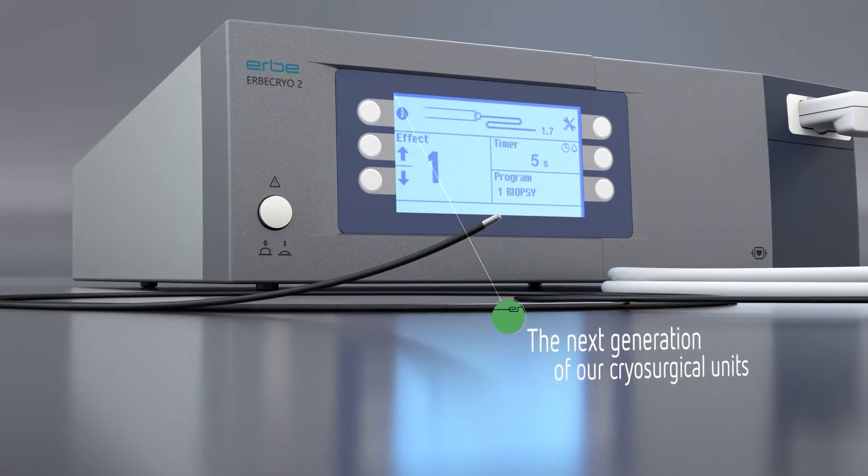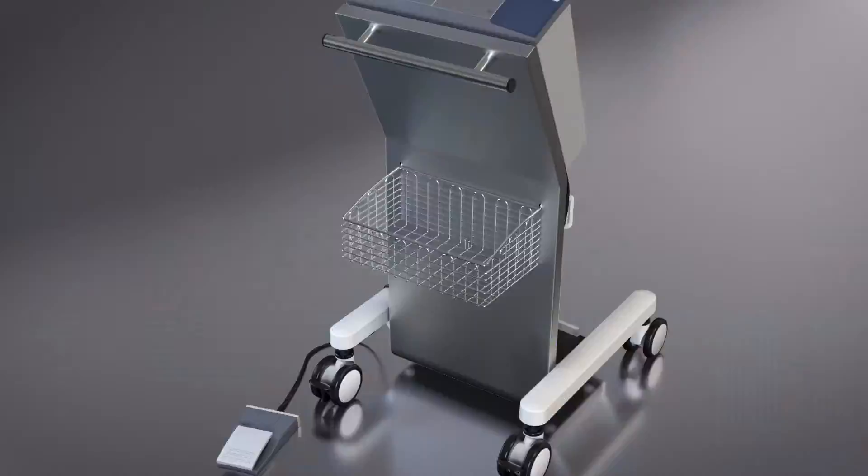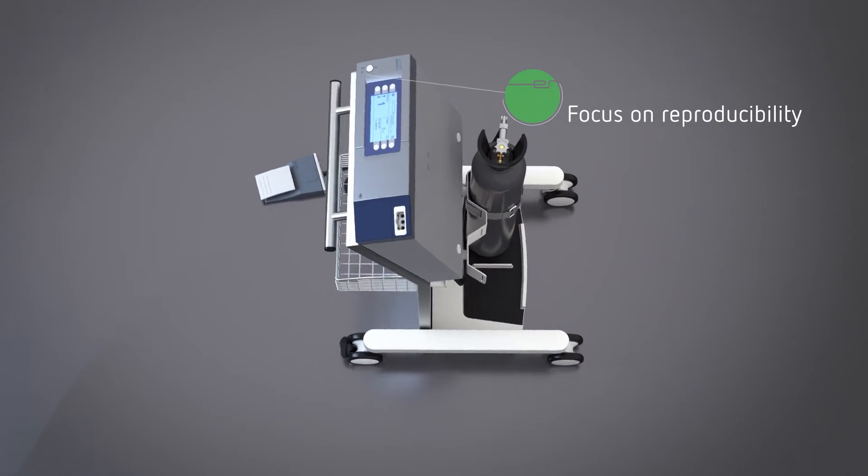The Herba Cryo 2 is the next generation of our cryosurgical units and was designed with a focus on improved reproducibility for state-of-the-art flexible cryo applications.